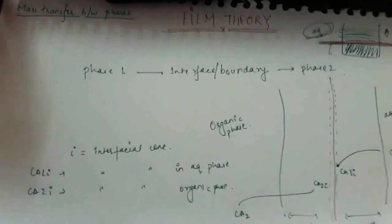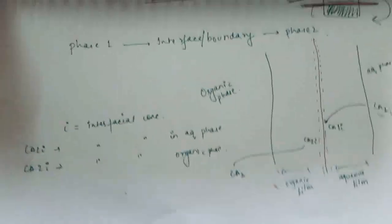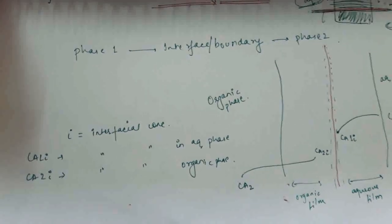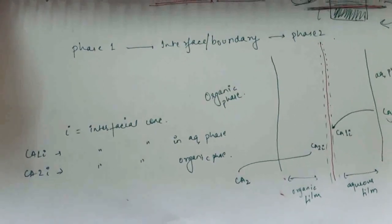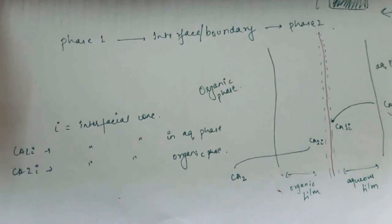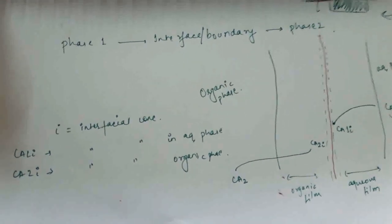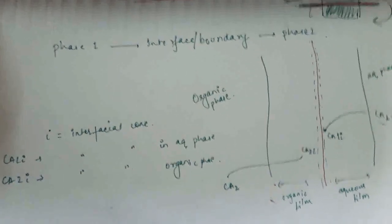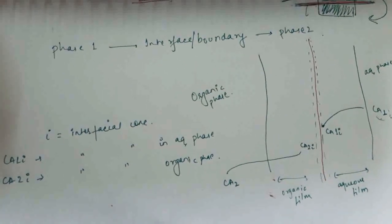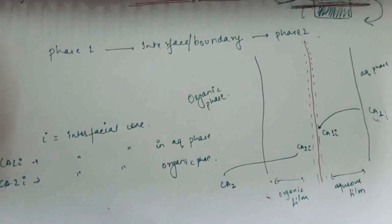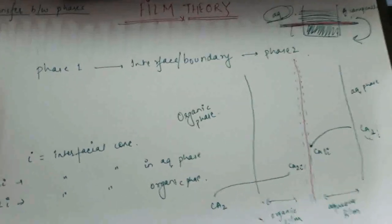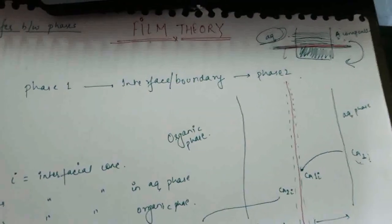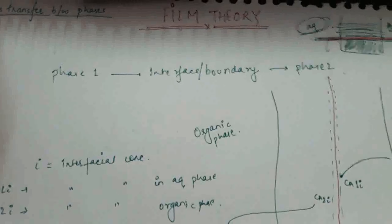These were the two theories of molecular diffusion: diffusion theory and film theory. Notes of two to three pages are attached with a link so you can refer to them. We will see you in the next video with convective mass transfer. Bye.